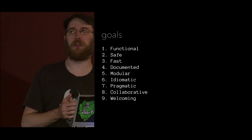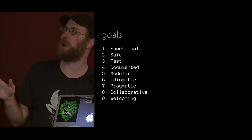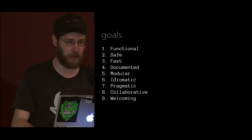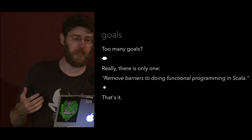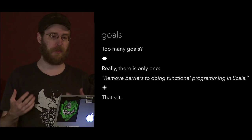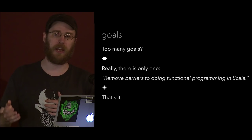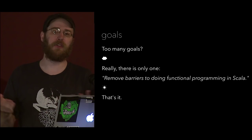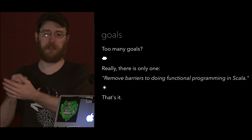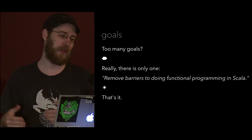In terms of the project goals, I started making a list and it quickly grew completely out of control — nine goals — which is already way too much. What I came up with is there's really a unifying goal for all those nine: basically, just to remove barriers to doing functional programming in Scala. There are a ton of these barriers, many technical — JVM, Scala compiler, Scala runtime, standard library — and others. My goal with Cats is really just to try and remove those barriers.